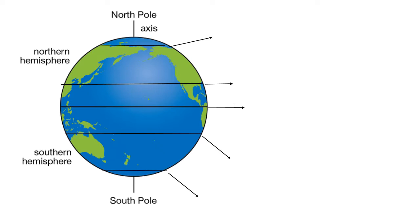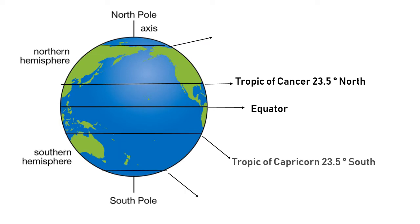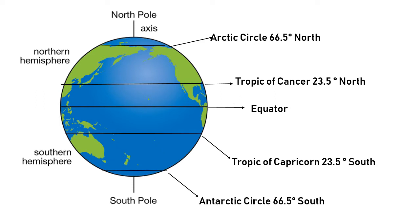Look at this image — this is the common image of our earth. There are five main latitudes that are given specific names: these are the Equator, Tropic of Cancer, Tropic of Capricorn, Arctic Circle, and Antarctic Circle.